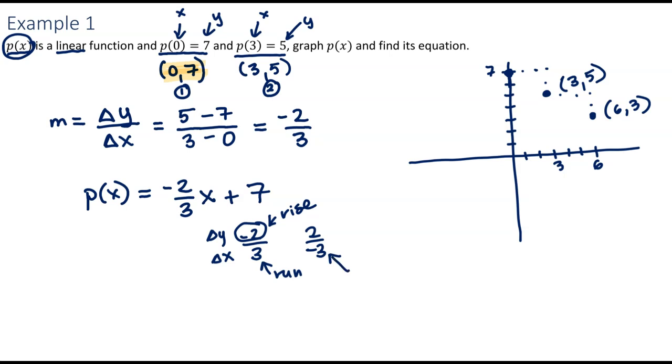I do want to point out that you can also use the other version. That says if your run is negative 3, your rise would be 2. So we're going to go back 3, 1, 2, 3, up 2. And we could get a point at negative 3, 9. And then to sketch, you just connect the dots. Technically, you only need 2 points for a line. Having a third one just to check yourself is never a bad idea.